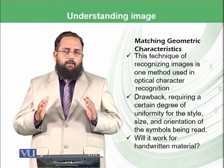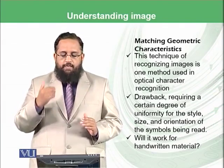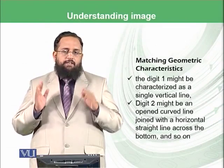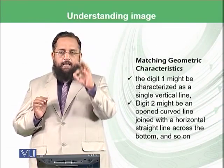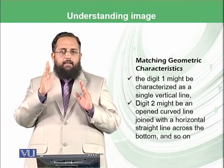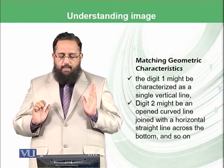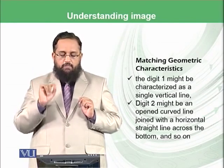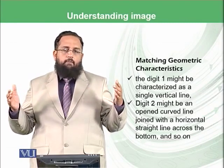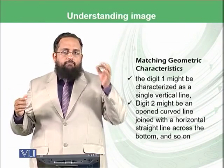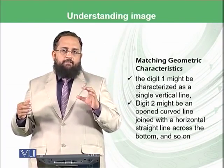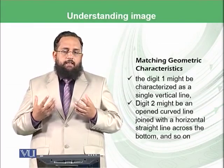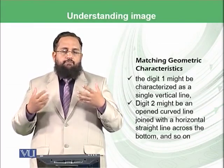In such a situation, we need to match geometric characteristics. The digit 1 might be characterized as a single vertical line, so small fluctuations can be handled. Digit 2 might be an open curve line joined with a horizontal straight line across the bottom, and so on. Similarly, we can come up with different geometrical shapes, and after analyzing those shapes we can say this is 1, this is 2, this is 4, and where each is placed. This technique can therefore be applied to handwritten digits in different styles.